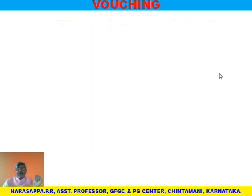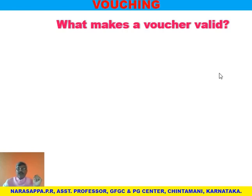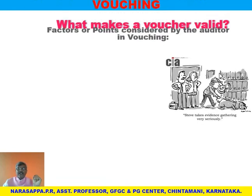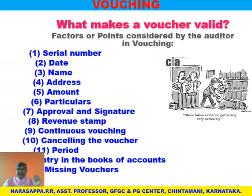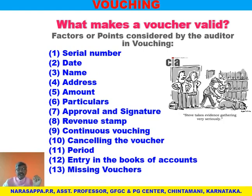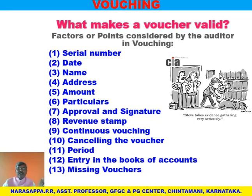What makes a valid voucher? Which voucher is said to be a good or valid voucher legally? We have to find out certain factors. Number one, a voucher should have a serial number from the beginning of the year — any financial year, they should number the vouchers one, two, three, four, five. There should be a date of occurrence of that particular transaction, then the name of the party, the address of that party, the amount of that voucher, and particulars — what is the item, its quantity, its rate, everything.